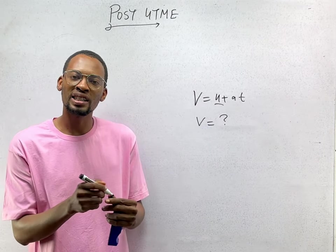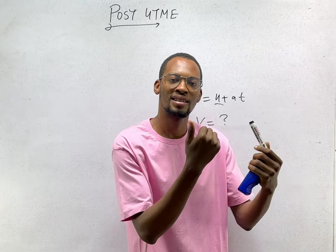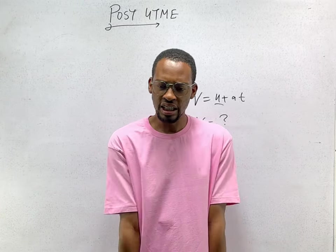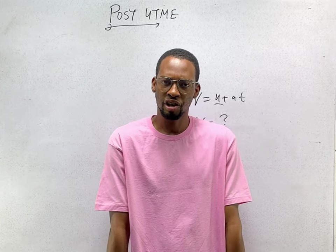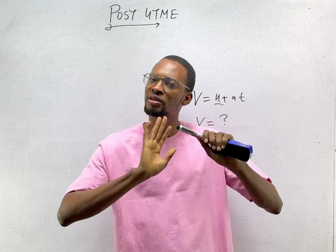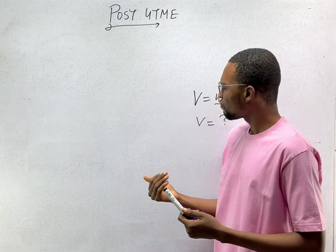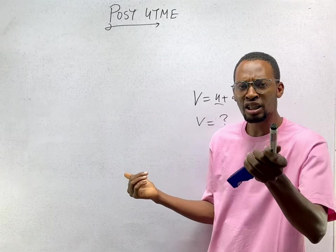We don't have U, but they already gave you U. If we see an object starts from rest, it means the initial velocity is zero. So, that is U for you. It did not start from a speed.